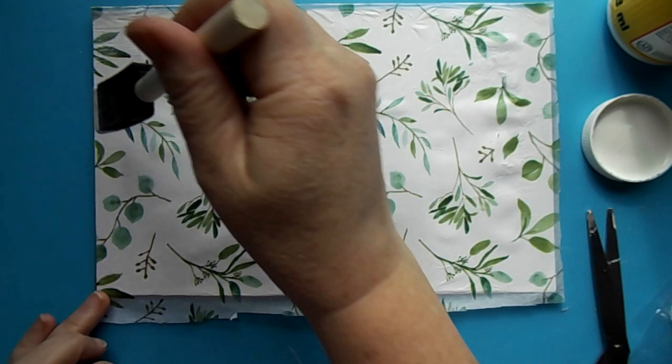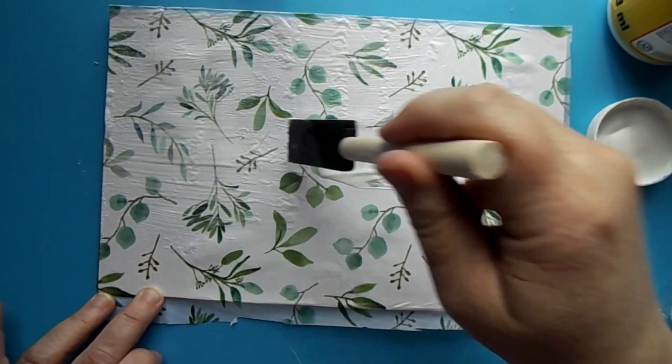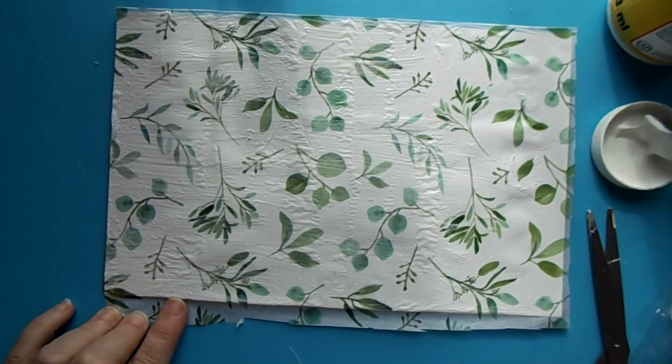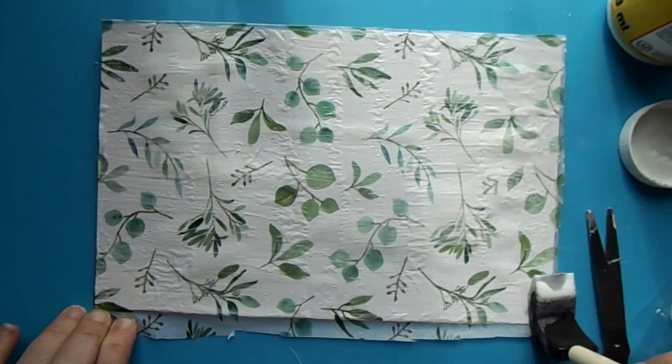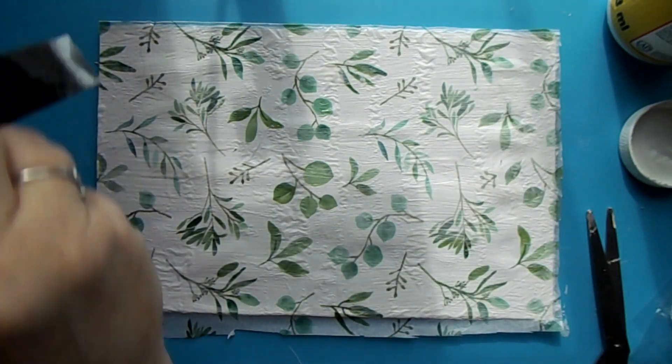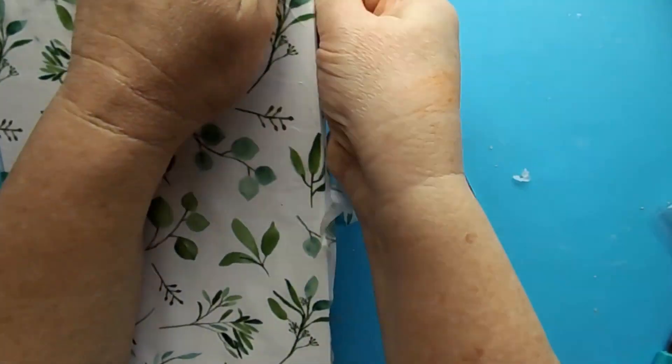Now that it's dry, I just put a whole layer across the top and you want to go in one direction so that you don't see a bunch of different strokes. I did use a matte Mod Podge. And now I'll let that dry.